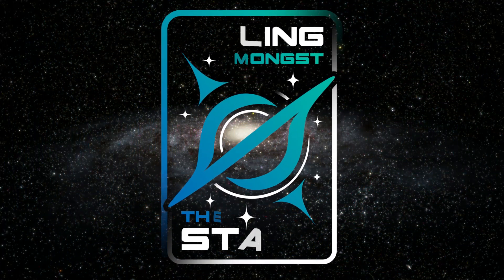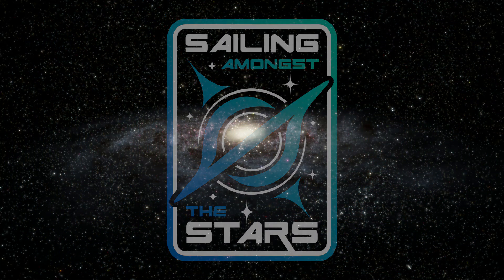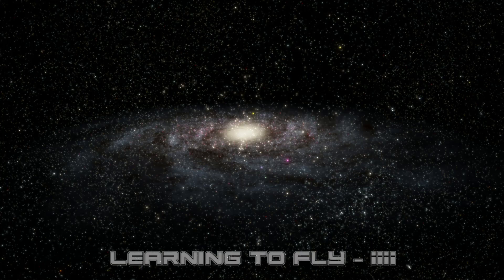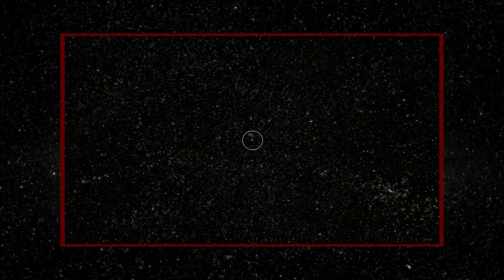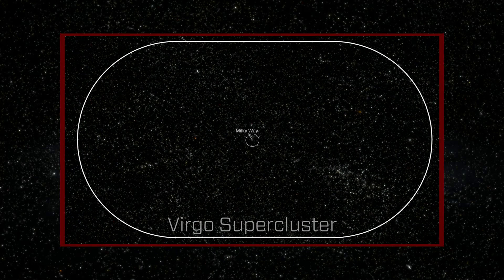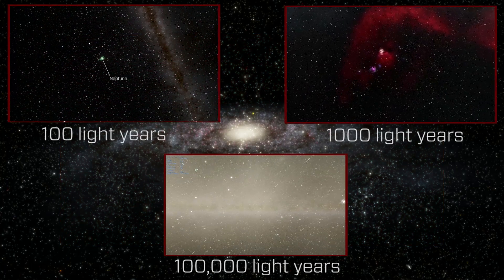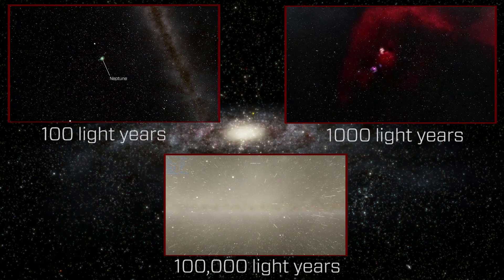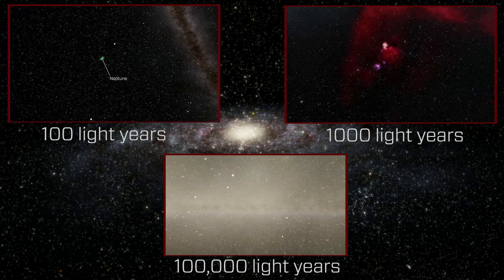Hello again, humans. This is Dr. Kai, and this is another episode of Sailing Amongst the Stars. In this episode, we're going to take our comprehension levels all the way up to 100 million light years and try to experience the distances involved in the supercluster of galaxies in which we inhabit. But we're going to build ourselves up to that, and if you haven't done the previous episodes in the Learning to Fly series, I strongly recommend you do, as they are a requirement.